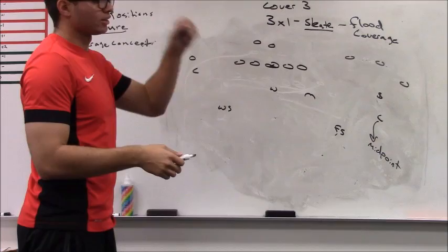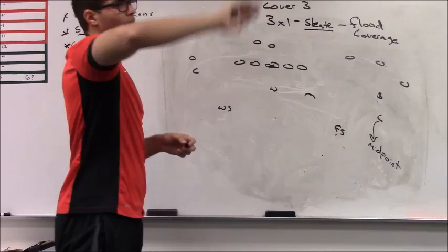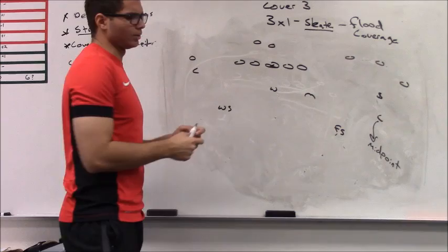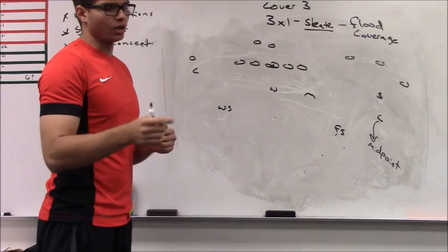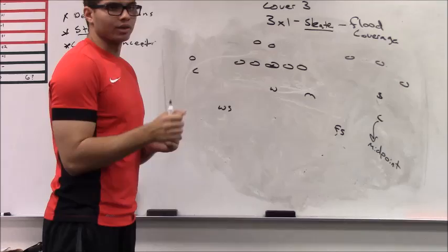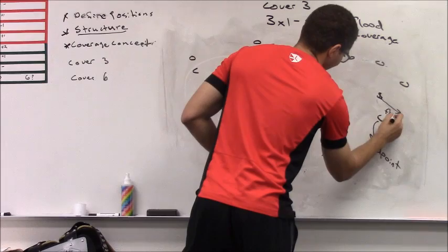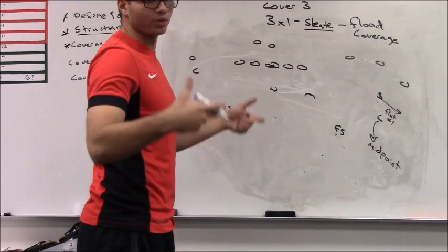The strong safety is going to be 5x1 outside the number 2. If the top, or with the divider leverage out on number 2. If the 2 is really wide, he plays inside leverage. If the 2 gets really tight, so let's say we've got a tight end wing set, he'll go to 5x3. So if we've got that number 2 is like a wing, we'll play 5x3. Otherwise, we'll play 5x1. He's going to push to the flat, and he's going to relate to 1 in the flat. He has to take the final number 1 through the flat.